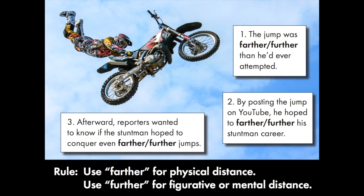Here are your sentences. Number one: the jump was farther than he'd ever attempted. Number two: by posting the jump on YouTube, he hoped to further his stuntman career. Number three: afterward, reporters wanted to know if the stuntman hoped to conquer even farther jumps. Here comes the answer key. Number one is farther — it's a clear distance. Number two is further — he's mentally trying to increase the scope or success of his career. Number three is farther again — we could actually measure the jumps.